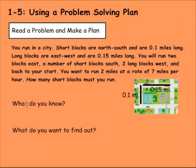So the question it asks us here is, what do you know? We need to write down all the information that we think is going to help us solve this problem. We know the length of short blocks: short blocks are 0.1 miles. We know the length of the long blocks: those are 0.15 miles.